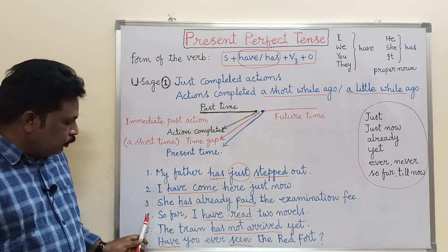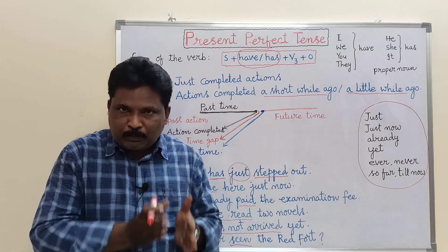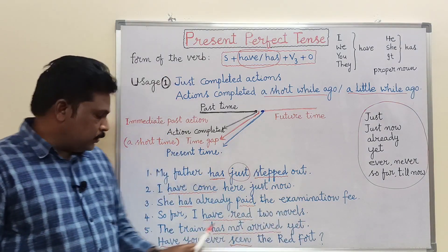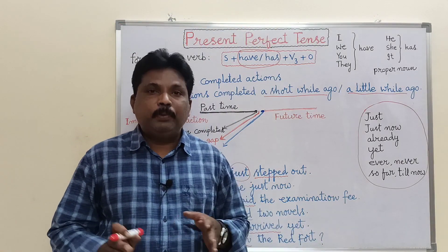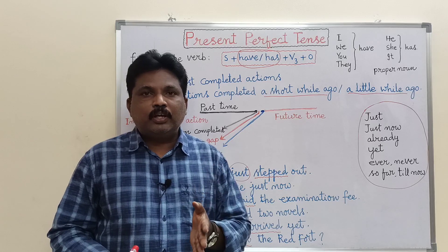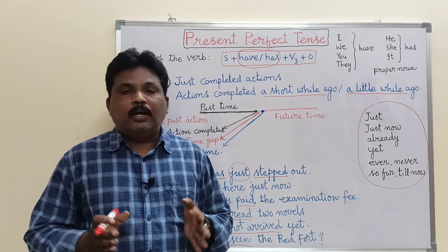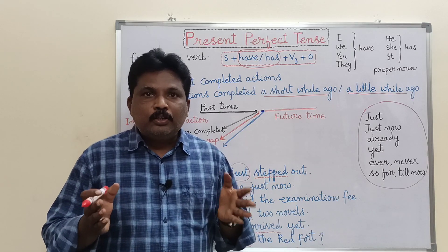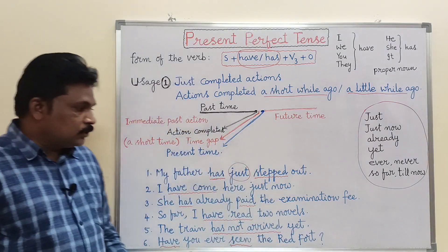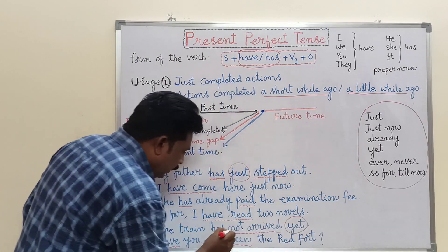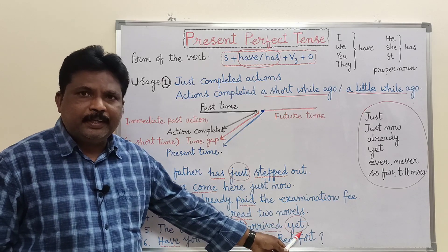Fourth example: 'So far, I have read two novels.' 'So far' means by this time — by a specific point of time at the present moment. Fifth example: 'The train has not arrived yet.' For example, the train's scheduled time is 5 pm, you reached the station at 4.45, and now it is 5.30 — you tell your friends 'The train has not arrived yet.' The word 'yet' is generally used in negative sentences.